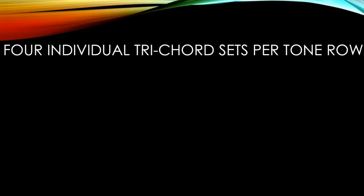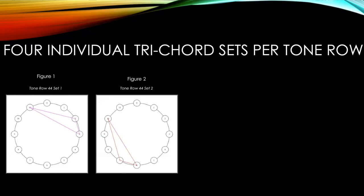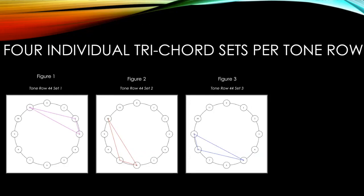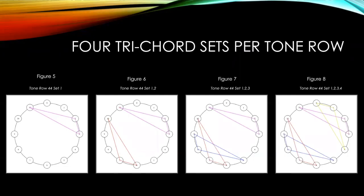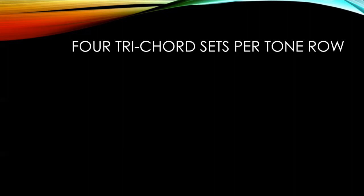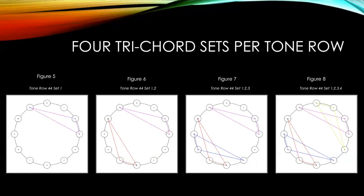My geometric analysis features a minimum of eight images per tone row. The first four images which accompany each tone row are representative of the four individual trichord sets which occur in each tone row. In the instance of tone row 44, I have an image for set 1, set 2, set 3, and set 4. These four images show the sets as separate entities and allow one to see that all four sets are symmetrical in their intervallic content. The remaining four images show the progression of the four trichord sets in each row—sets 1, then 1 and 2, then 1, 2, and 3, then 1, 2, 3, and 4—allowing one to focus on the symmetry of the entire row rather than the individual sets.